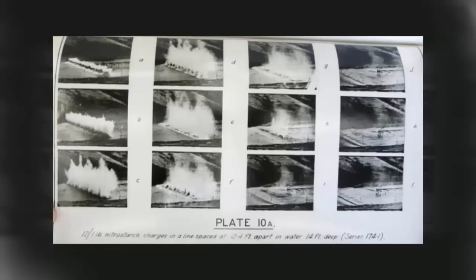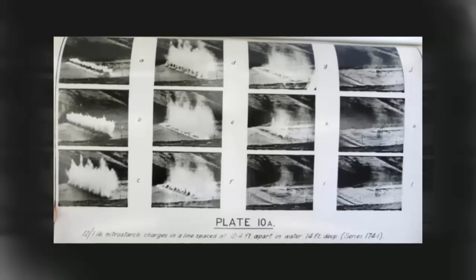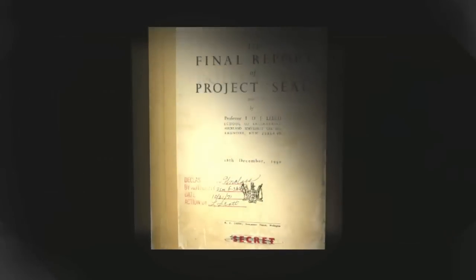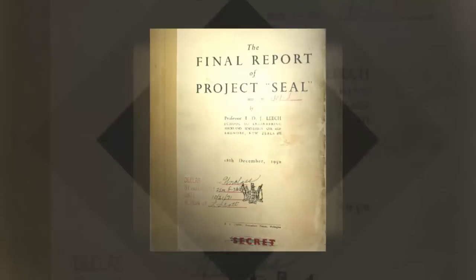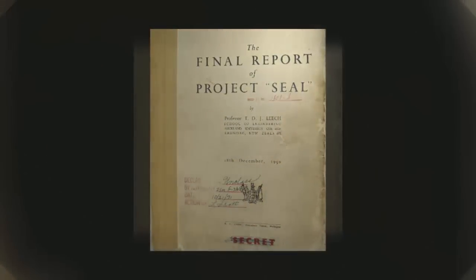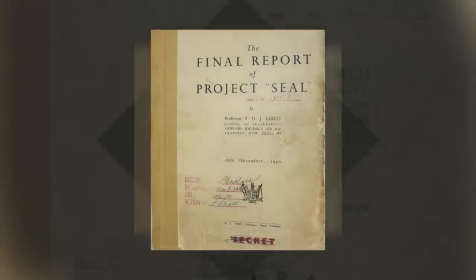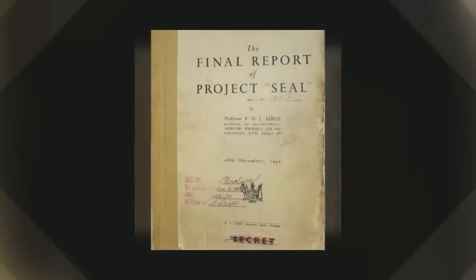These top-secret tests were conducted as a possible alternative to the Manhattan Project. In 1945, after just a year of experimentation, the United States abandoned the project. New Zealand decided to continue their research well into the 1950s, and declassified documents revealed that over the span of five years, over 3,500 bombs were detonated off the coast of Auckland.